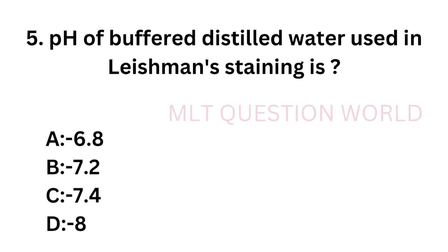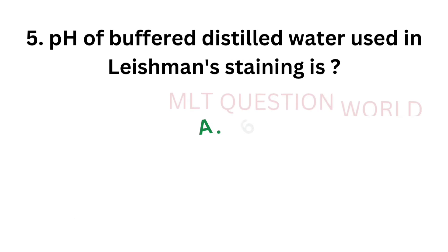Question number 5: The pH of buffered distilled water used in Leishman staining is — option A: 6.8, option B: 7.2, option C: 7.4, option D: 8. The correct answer is option A, 6.8. The pH of buffered distilled water used in Leishman staining is 6.8.